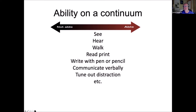All of us fall somewhere on a continuum of being able to do certain things and not able to do others. Some people have 20-20 vision, some are not able to see at all, and most everybody else falls somewhere in the middle — scattered across that continuum. The same is true for hearing, walking, reading print, writing, communicating verbally, or tuning out distraction. It is not a binary thing — people with disabilities and without. It's a spectrum of abilities on many different characteristics.